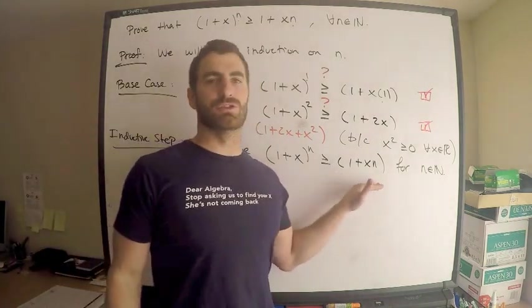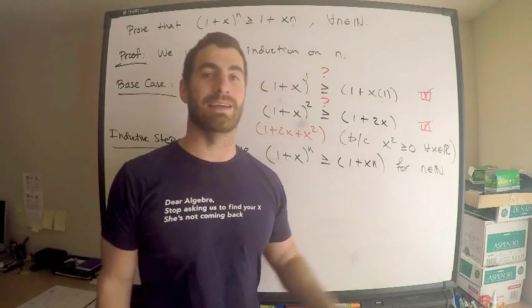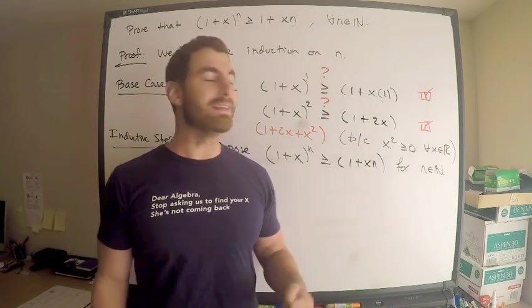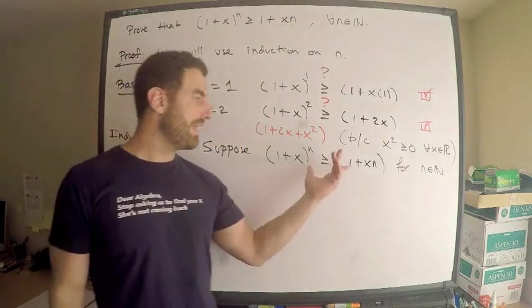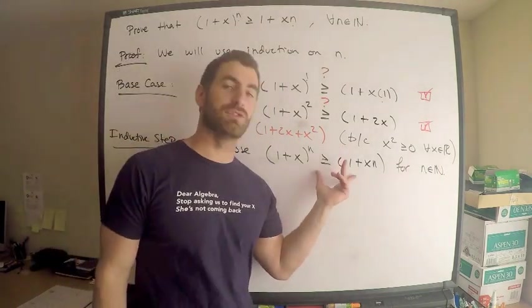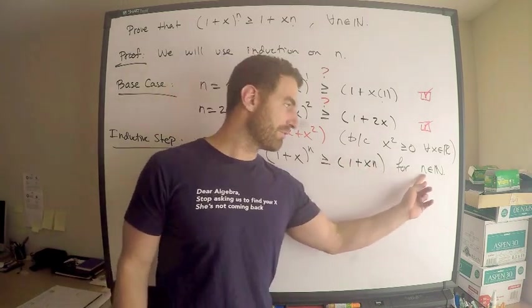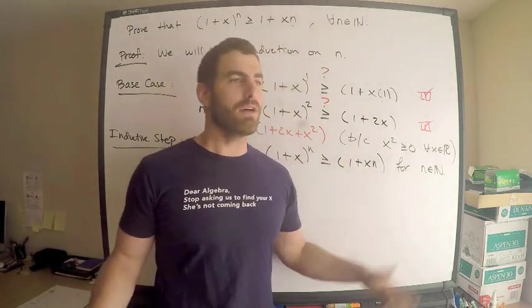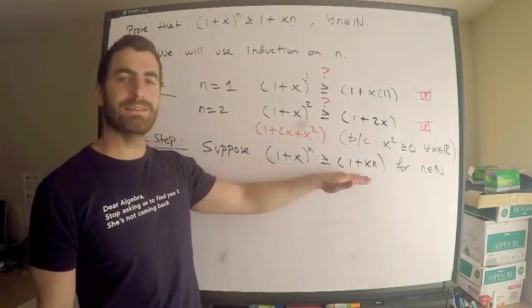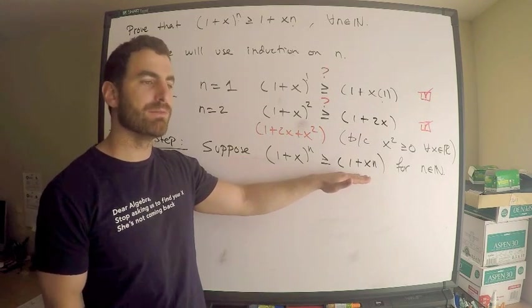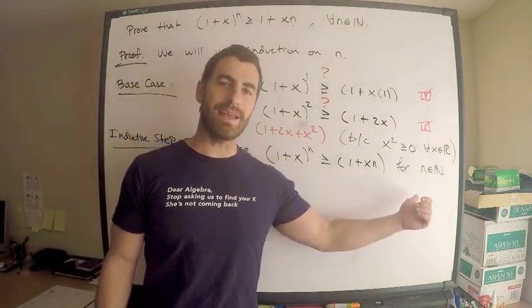If I assume this is true, and this assumption actually implies that the next natural number also yields an inequality like this, which is true, that natural number and this original natural number, n, they're completely arbitrary. It must be true for every single n. So what it's saying here is that this case, if true, assume it's true, it implies the next case is true.